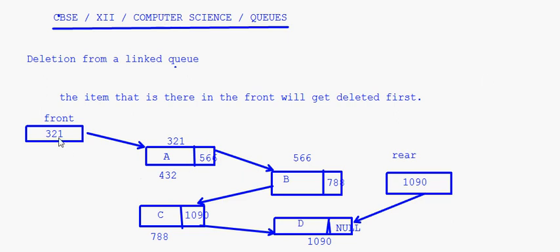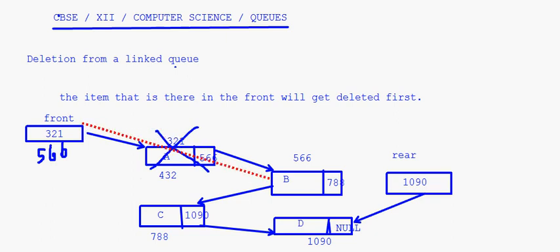If I want to delete this first node, the address of front will get modified. The next of this first node is 566, so 566 will come to the front — that is all we have to do. Front gets rewritten with address 566, and the link to the old first node is gone. So now front is pointing to 566.